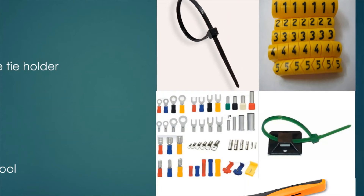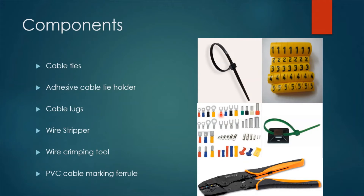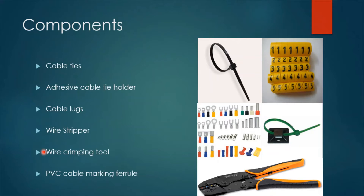Cable lugs are installed at the inside of the wire to be inserted inside the circuit breaker, and as we can see, there are different and several types of lugs. According to the terminal of the circuit breaker, you will select the most suitable lug for your case. A wire stripper tool is used to remove the insulation from the conductor, and it looks similar to the tool shown here. The wire crimping tool shown here is used to make the crimping of the lugs and to tighten the lugs within the wire.